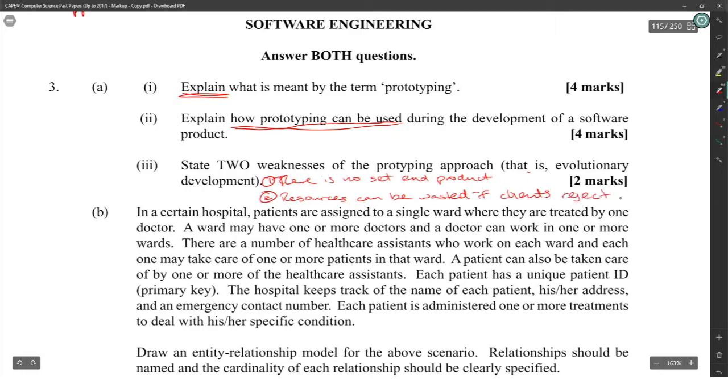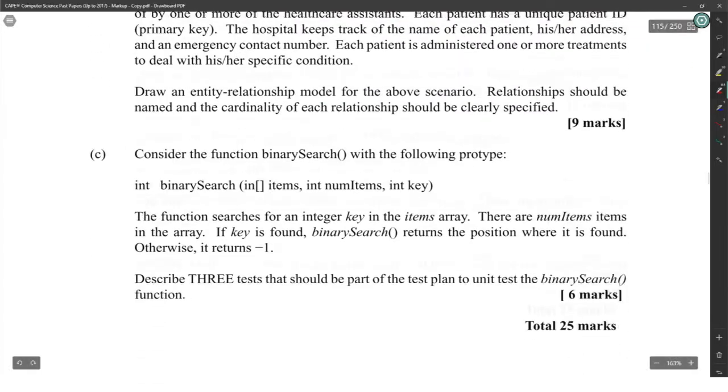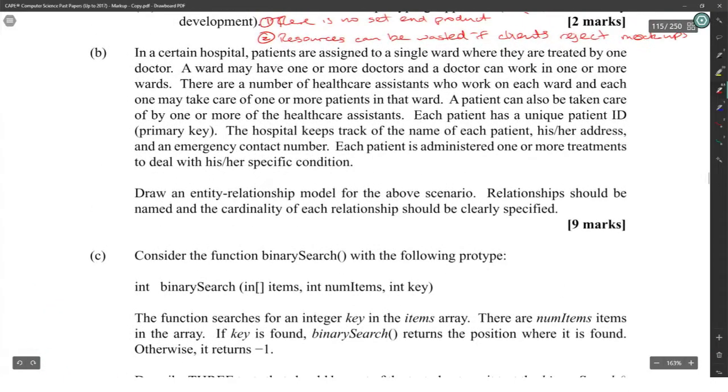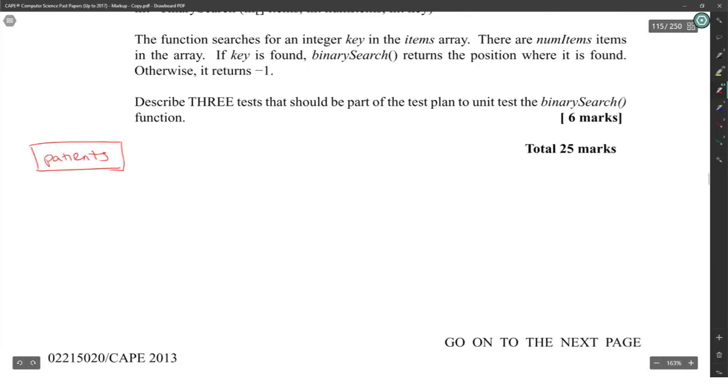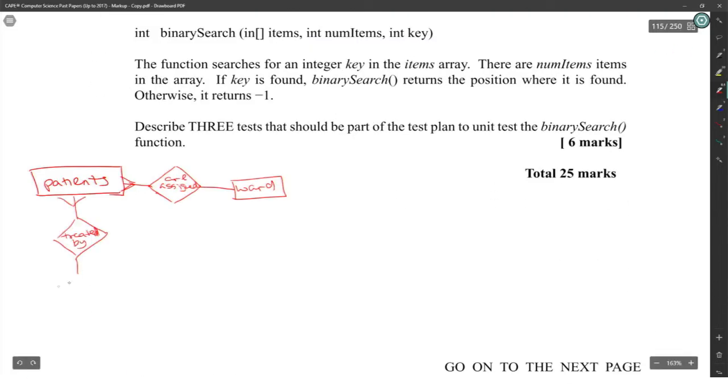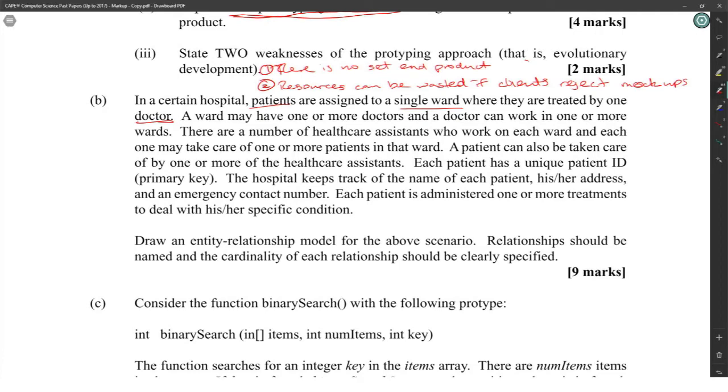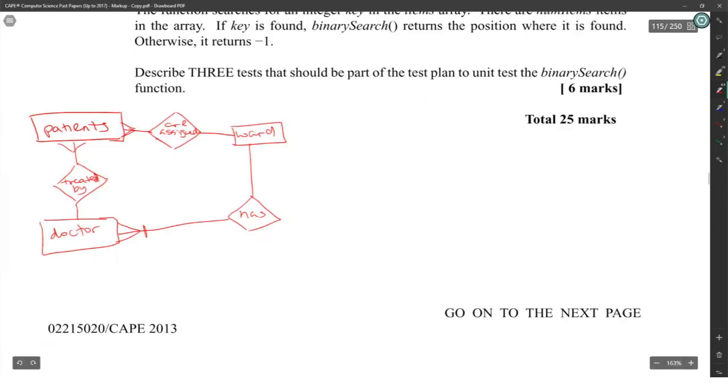A data flow diagram question. No, this is an ERD. Nice and easy. In a hospital, patients are assigned to a single ward. Multiple patients are assigned to a single ward. Patients assigned to ward. Multiple patients, many patients assigned to a single ward. They are treated by one doctor. A ward may have one or more doctors, so one ward has one or more doctors. And a doctor can work on one or more wards. Nice.